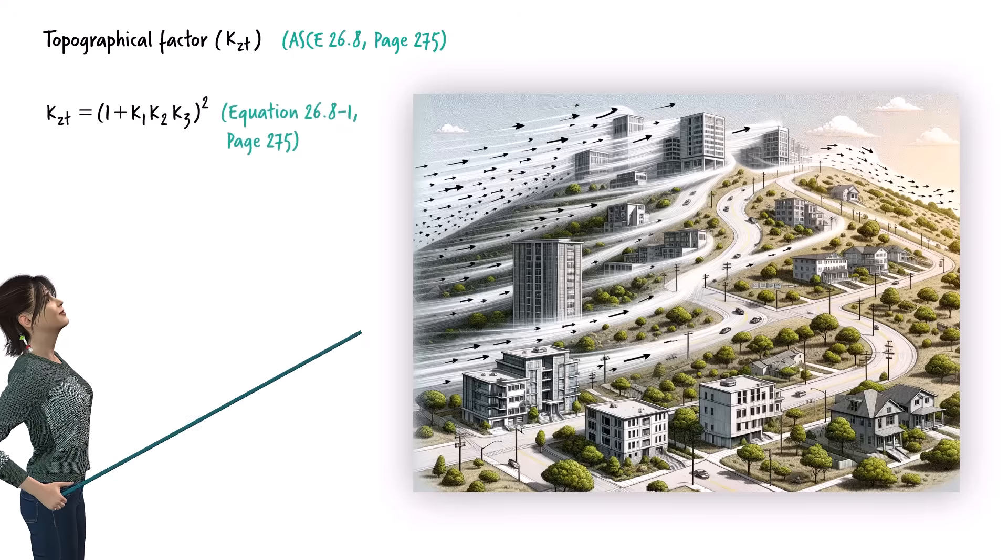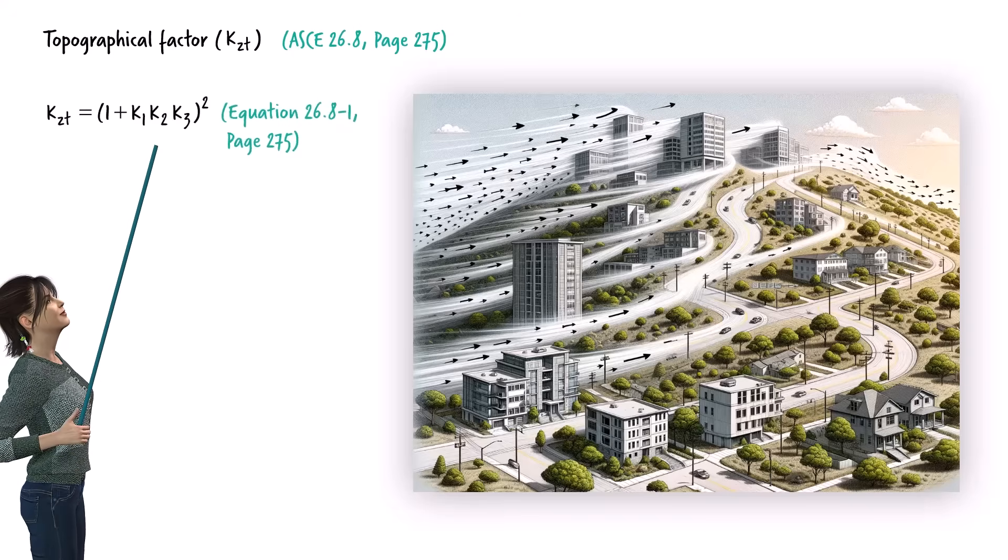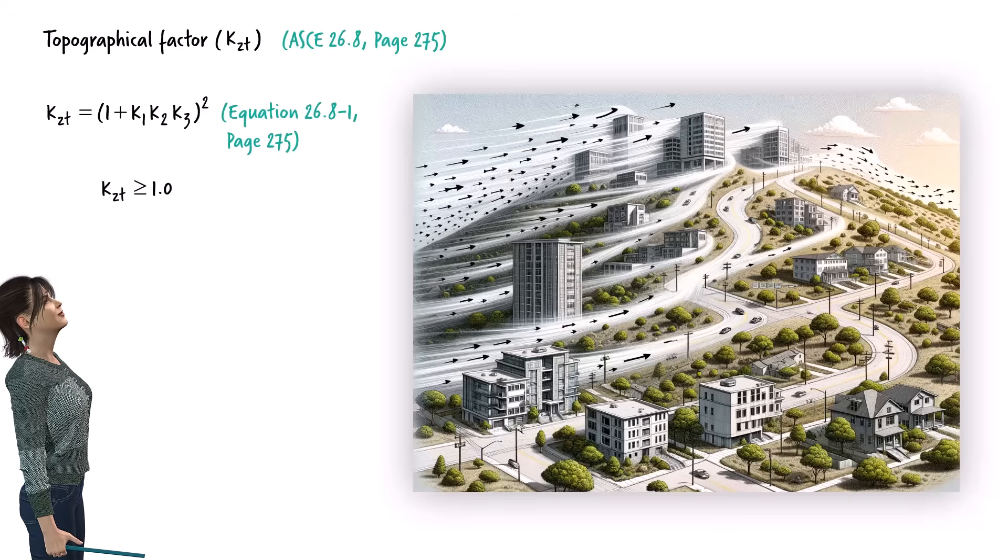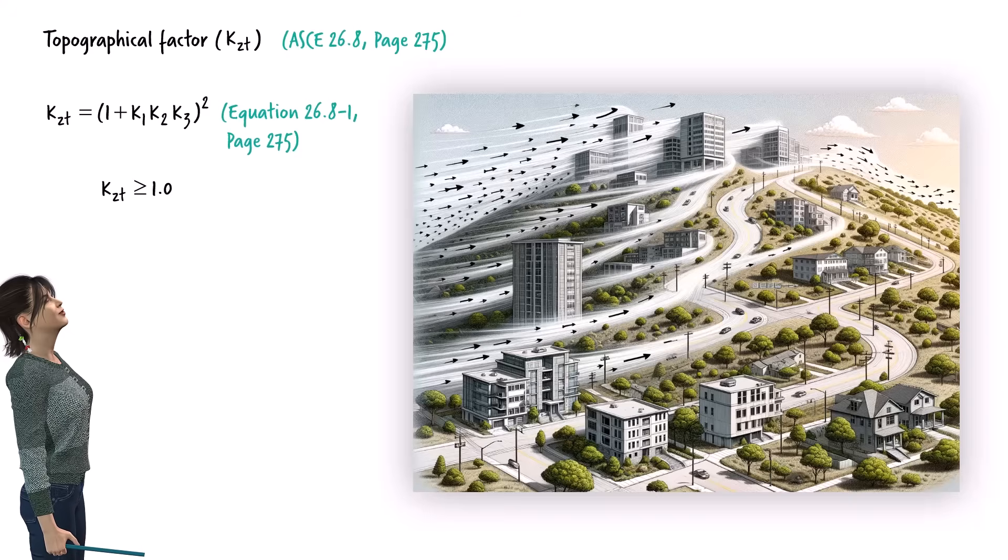The coefficient is calculated using this equation. It uses three multipliers, K1, K2, and K3. They range between 0 and 1. Therefore, K_ZT is always greater than or equal to 1. When a building is near a hill, ridge, or escarpment, the coefficient is greater than 1. On flat terrain, it equals 1.